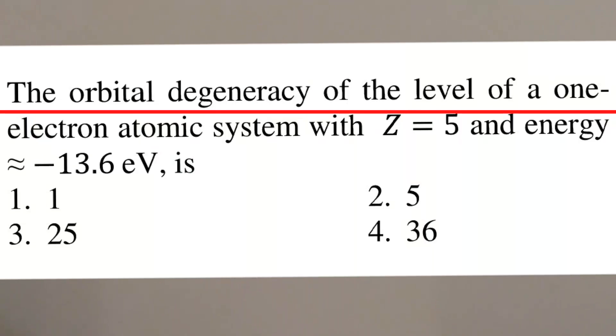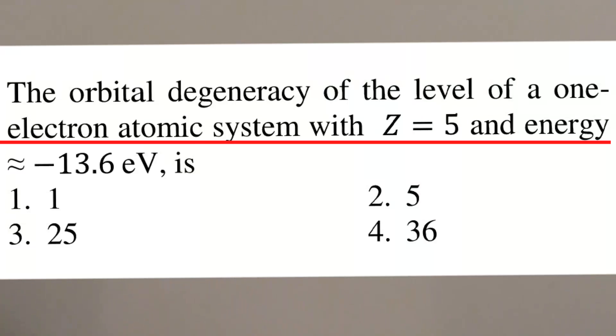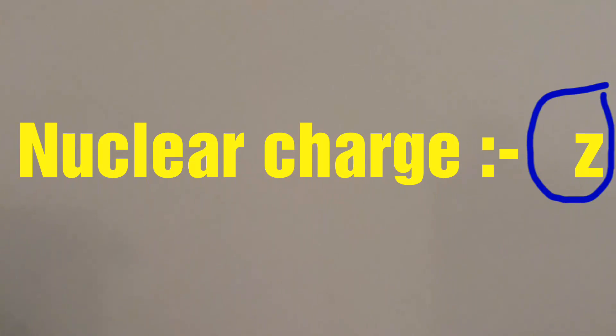The orbital degeneracy of the level of a one-electron atomic system with Z equals 5 and energy negative 13.6 electron volts is... The energy of hydrogen-like atom with nuclear charge Z...